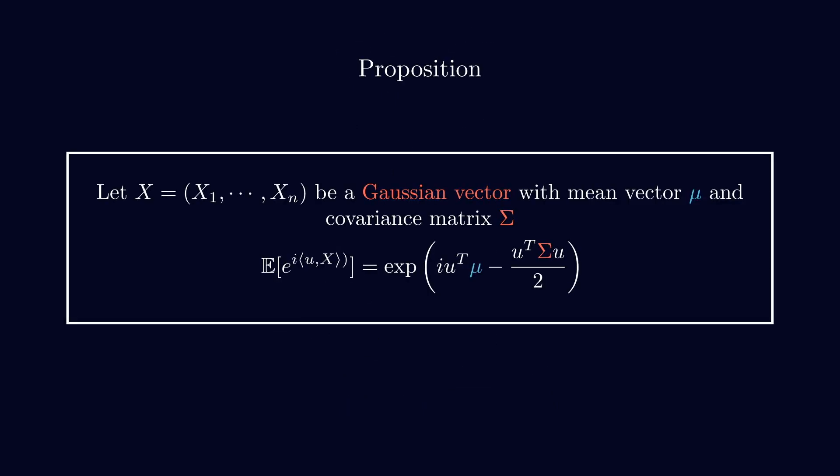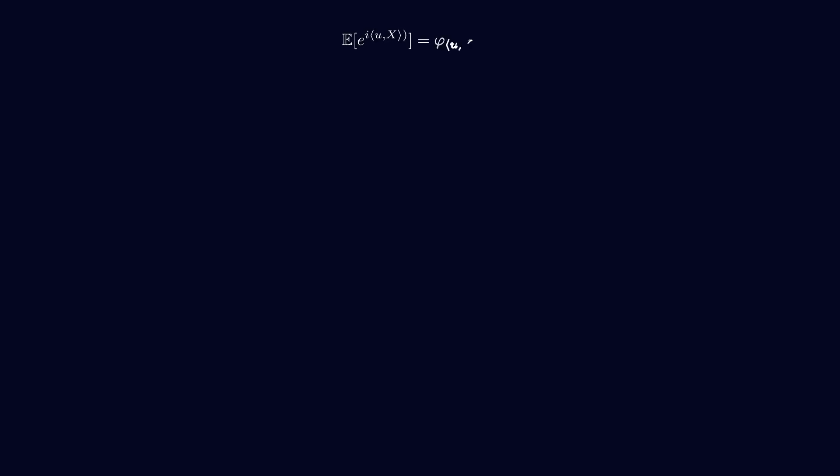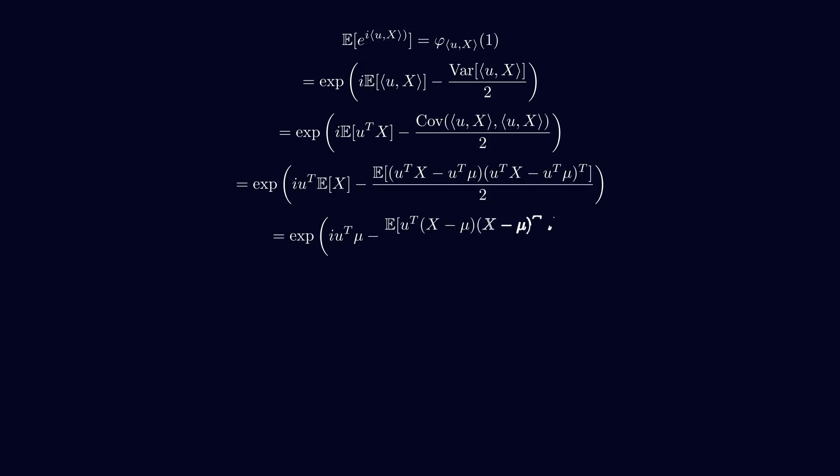Okay, and now we can look at this property that kind of does the link between the characteristic function, the mean vector, and the variance covariance matrix. So, the proof is very straightforward. We basically use the property of linearity of the expectation and the link between the variance and the covariance using the vector notation.